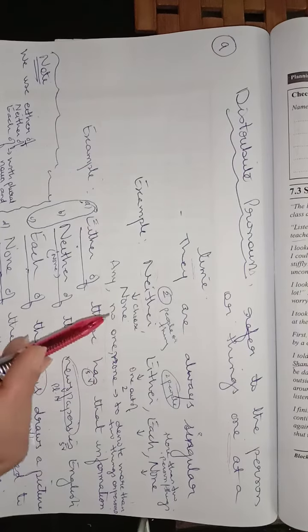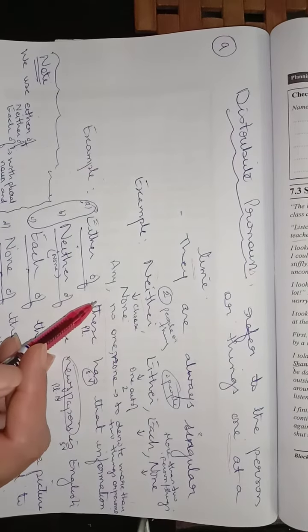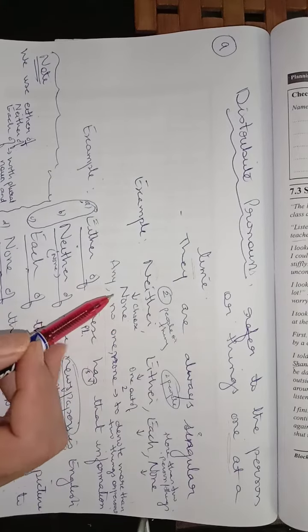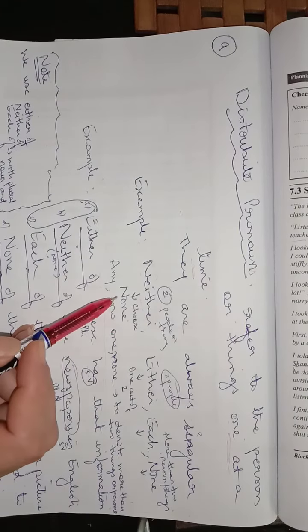So you have to opt only one. Out of two or more than two, you have to only opt one thing.